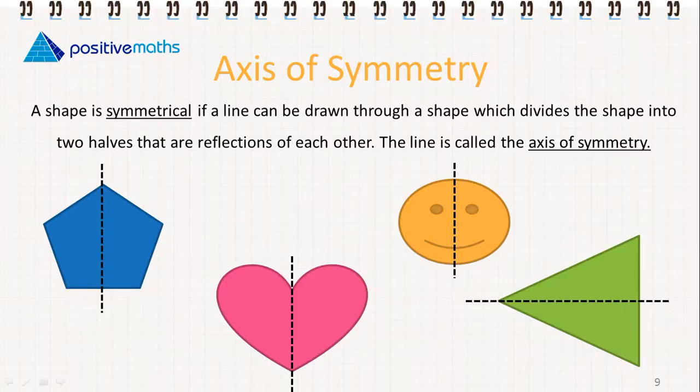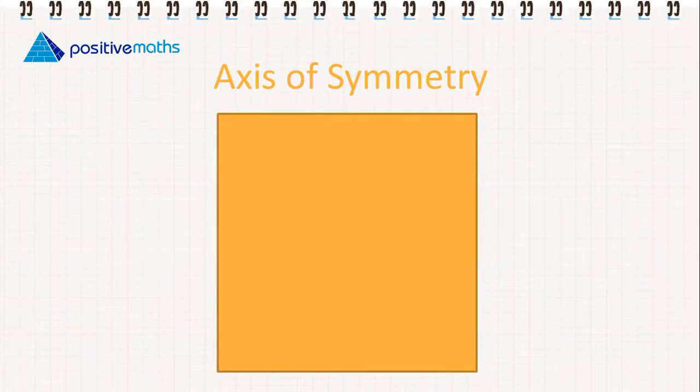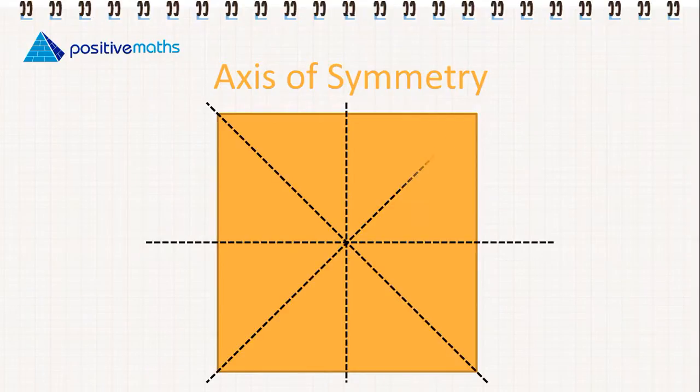So the axis of symmetry doesn't always have to be vertical or horizontal. So if we look at the square, for example, this has an axis of symmetry that goes horizontally, another axis of symmetry that's vertical, and two that are diagonal. So a shape can have more than one axis of symmetry.